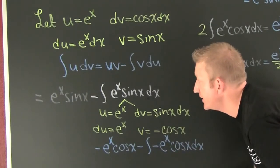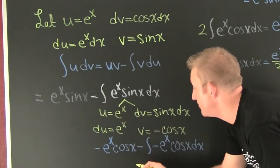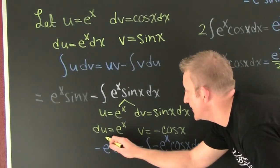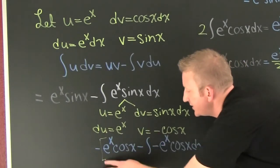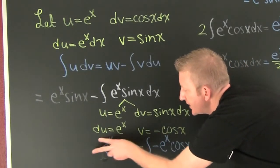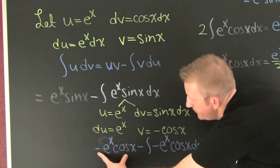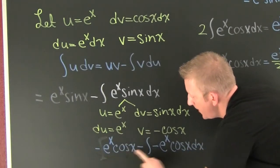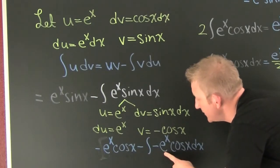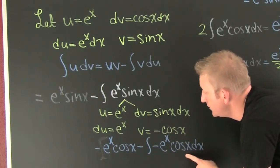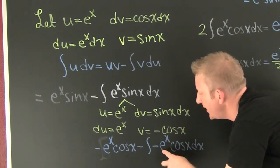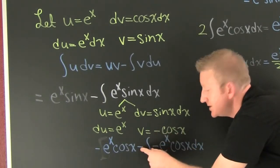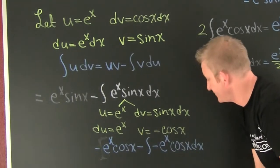I'm going to let u be e to the x and dv be sine x dx. That makes du e to the x and v minus cosine x. So again, I throw them into this form. This minus is on the outside of that integral. No, it's not. That's from v. So get rid of that.